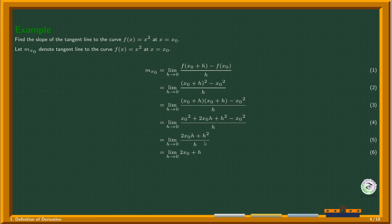This limit applies to both terms. As h goes to zero, this one will not change—it has no h effect in 2x₀, so it will remain as 2x₀. But this term will go to zero, so I get 2x₀.